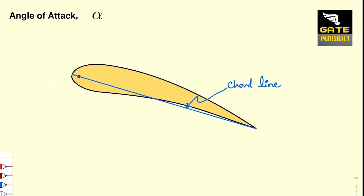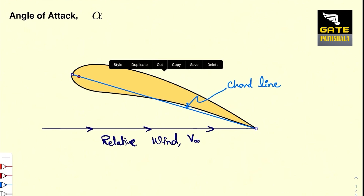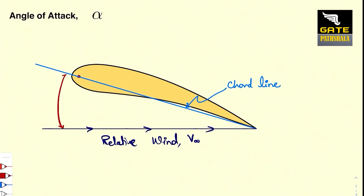Now we know what is a chord line. In basic aerodynamic definitions, let us study what is angle of attack. The angle of attack is denoted by a symbol alpha. We know the chord line of the aerofoil. If we have a relative wind coming like this — let us say this is the relative wind — flow is coming with a relative velocity V infinity. If I extend the chord line, the angle between the chord line and the relative wind is called alpha, which is the angle of attack.